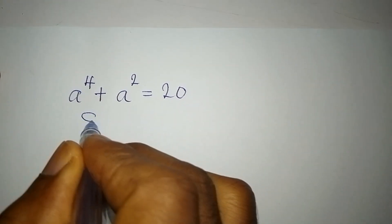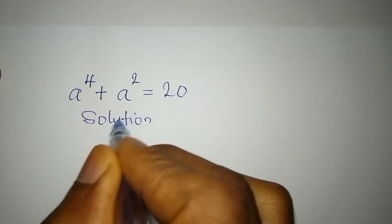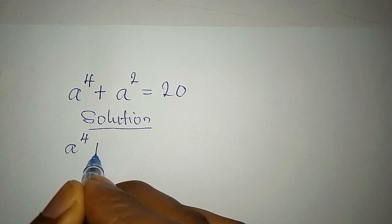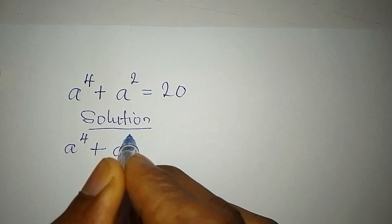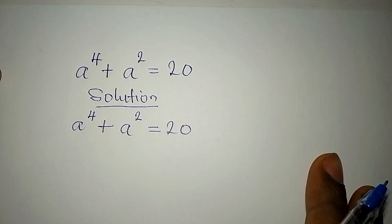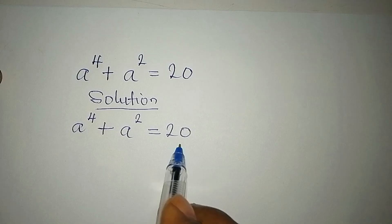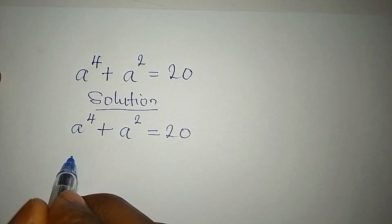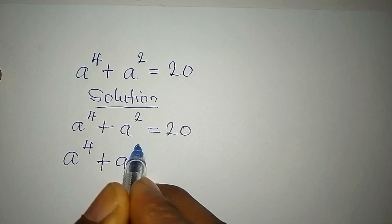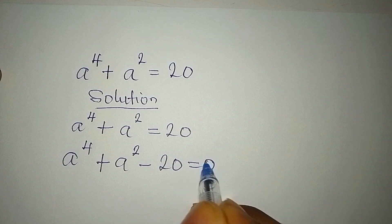Hello everyone. Let's provide the solution to this problem: A to the power of 4 plus A to the power of 2 equals 20. The first step is to bring 20 to the left, so we have A to the power of 4 plus A to the power of 2 minus 20 equals 0.